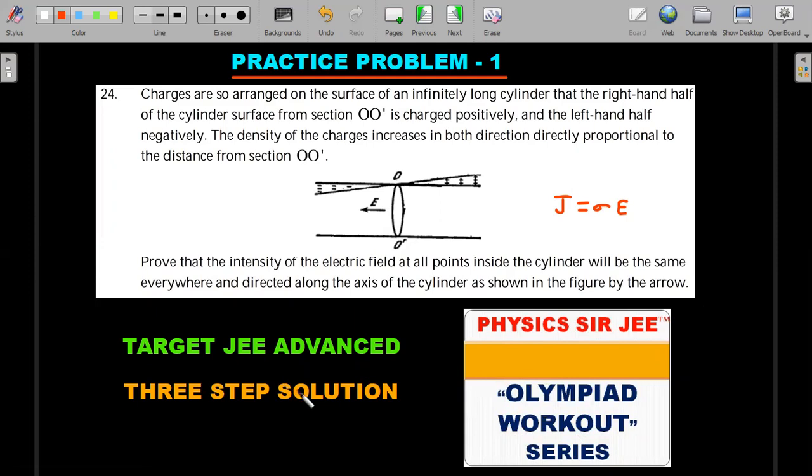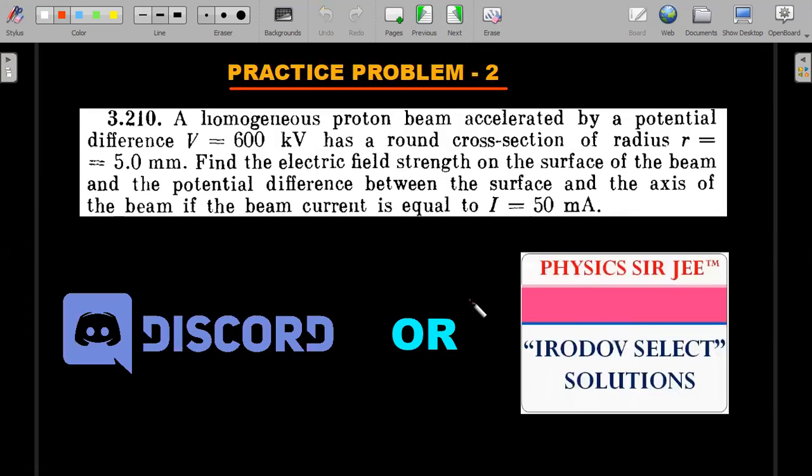Three-step solution, each step of it is so beautiful that it can be a JEE Advanced question. So there's definitely an advantage of going through this one. Let's move on to practice problem number two. Unsurprisingly, it is from IROD again, a less seen problem by the students where a beam of protons in a cylindrical round cross-section are moving, and it tries to target the electric field calculation on the surface of the beam and also the potential difference between the surface and axis of the beam. Whenever potential difference is asked perpendicular to the direction of flow, it will be a very unique concept that requires students' understanding. A similar concept appeared as a Hall potential difference in JEE 2020 examination. We'll take up that question also.